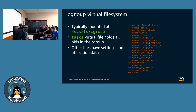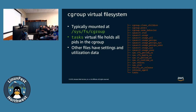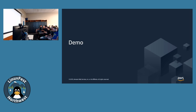Cgroups are exposed in a virtual file system usually mounted at /sys/fs/cgroup. In that virtual file system, different files appear in each of the controllers. In all of them you'll see a file called 'tasks' which holds all of the process IDs assigned to that particular cgroup. The other virtual files either have utilization data about what resources are being used, or settings that you can control for limiting maximums. Let's go and do a demo.